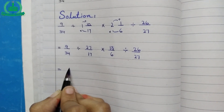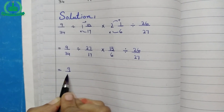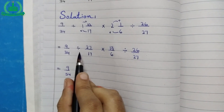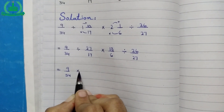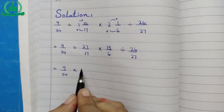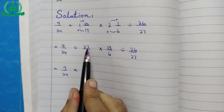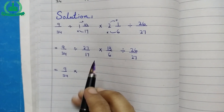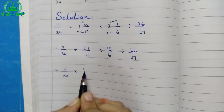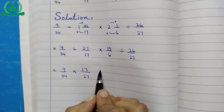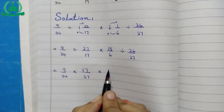Third step equals to 9 upon 34. Now we change division into multiplication. We take the reciprocal of 27 upon 17 — it becomes 17 upon 27. Multiply 13 upon 6.